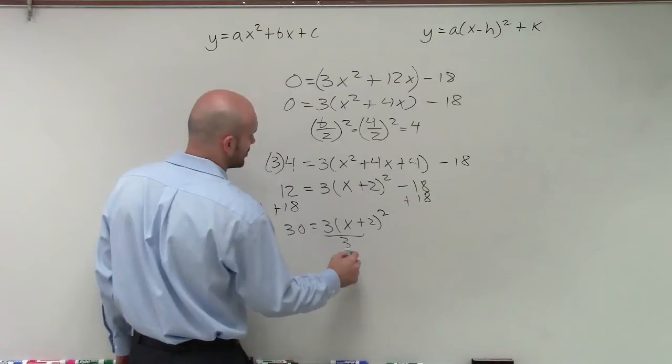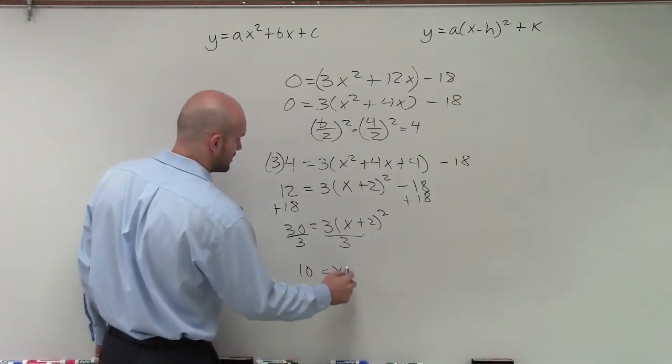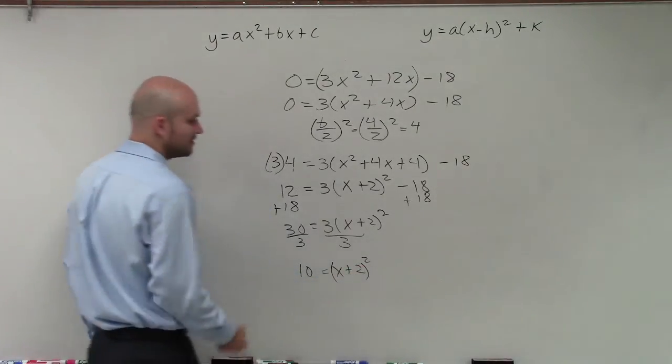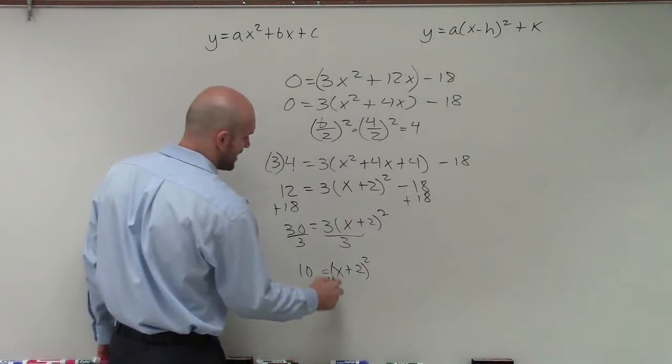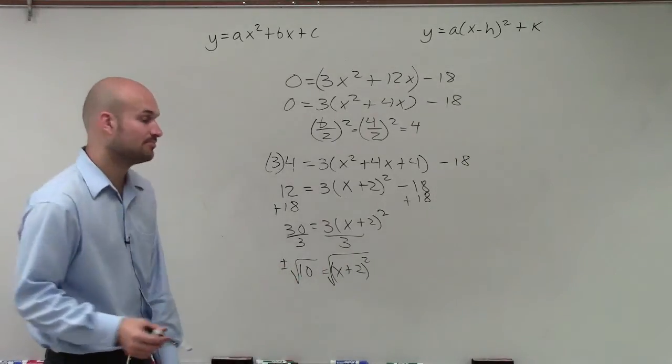Now, I undo the multiplication of 3 by dividing. So therefore, I have 10 equals x plus 2 squared. Now I can take the square root of that, and make sure we take the square root. You introduce the plus and the minus.